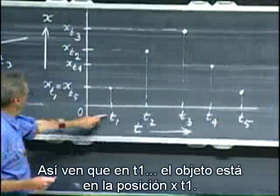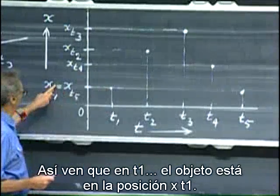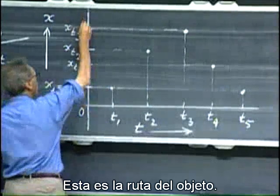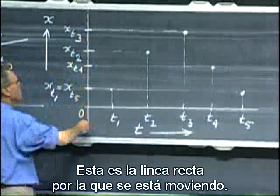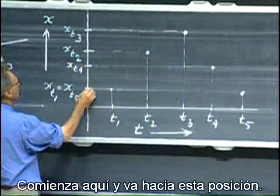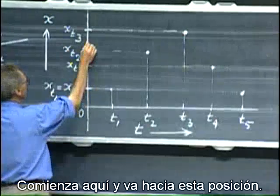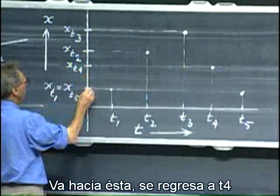So you see that at t1, the object is at position x-t1. This is the road of the object. This is the straight line where it's moving. It starts here, and it goes to this position. It goes to this one. It comes back to t4, and it comes back here.